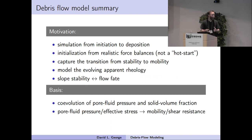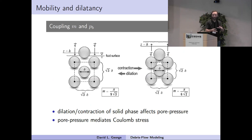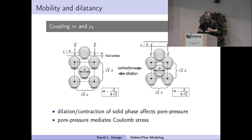The basis for modeling that fate is the co-evolution of pore fluid pressure and solid volume fraction. If pore fluid pressure increases, that reduces effective stress or resistance of the flow, leading to a mobile flow. If pore fluid pressure decreases, that stabilizes the flow due to higher resistance. To model this, we use the concept of dilatancy, which allows us to couple the evolution of solid volume fraction and pore fluid pressure. If we have a loose granular mixture and it begins to shear, it contracts, drives up the pore fluid pressure, drives down the resistance, and becomes highly mobile. Conversely, if you have dense material, it shears, dilates, drives down pore fluid pressure, increases resistance, and can stabilize.